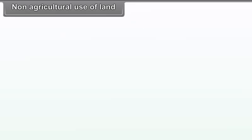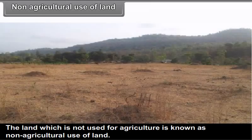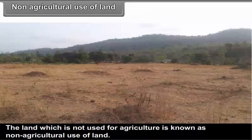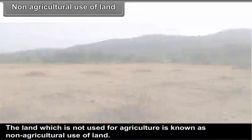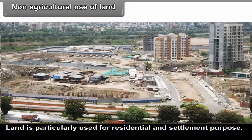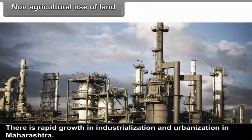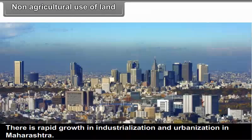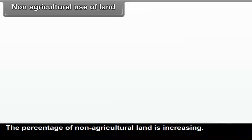Non-agricultural use of land: Land which is not used for agriculture is known as non-agricultural use of land. Land is particularly used for residential and settlement purposes. There is rapid growth in industrialization and urbanization in Maharashtra, and the percentage of non-agricultural land is increasing.